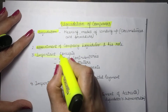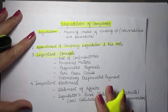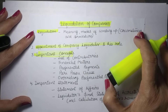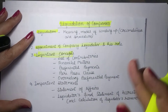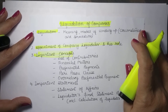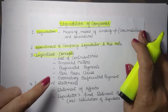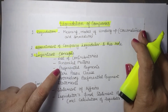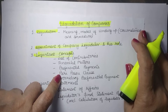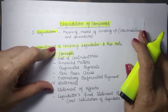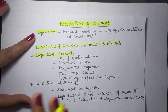Then we have certain important concepts which are relevant for liquidation of companies. When we are in the process of closing the books of the company and realizing all the assets and paying all the liabilities, certain things must be known to us — like list of contributories, financial matters, preferential payments, pari passu clause, and overriding preferential payments — so that we can understand the procedure of payment of liabilities.